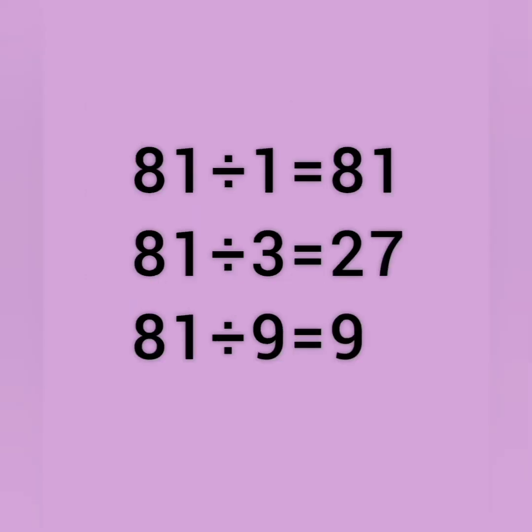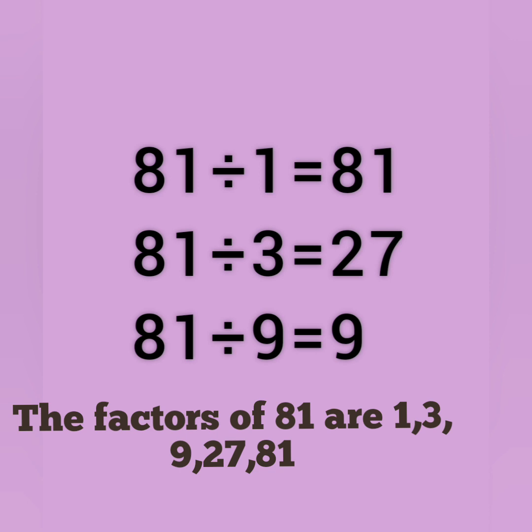81 divided by 1 is 81, 81 divided by 3 is 27, 81 divided by 9 is 9. So, the factors of 81 are 1, 3, 9, 27 and 81.